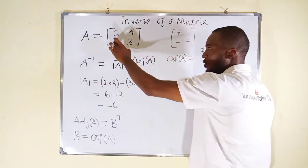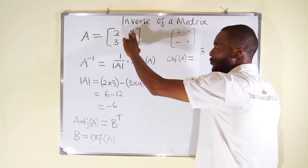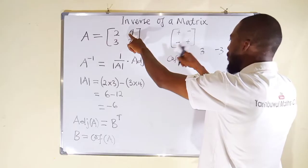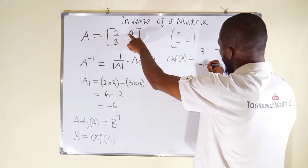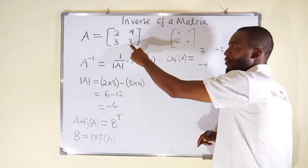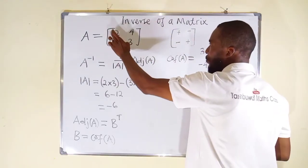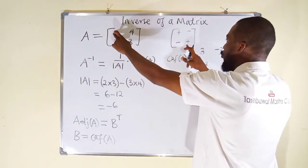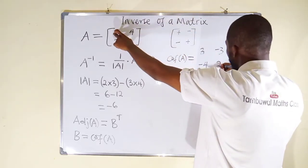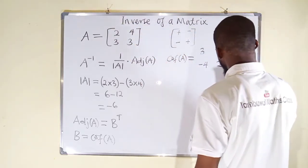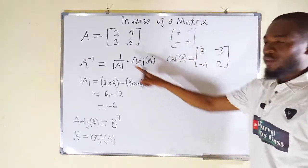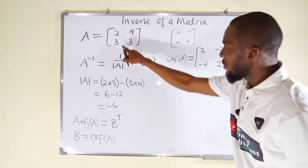Moving down, we close that column and row, we are left with 4. Multiply by the negative sign, it becomes negative 4. And the last entry: closing its row and column, we are left with 2. Multiplied by the positive sign, it stays positive 2. So this is the cofactor matrix B for matrix A.